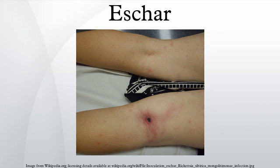Escharotics known as black salves, containing ingredients such as zinc chloride and sanguinarine-containing blood root extracts, were traditionally used in herbal medicine as topical treatments for localised skin cancers and can be effective in some cases, but often cause scarring and can potentially cause serious injury and disfigurement. Consequently, escharotic salves are very strictly regulated in most western countries, and while some prescription medicines are available with this effect, unauthorised sales are illegal.